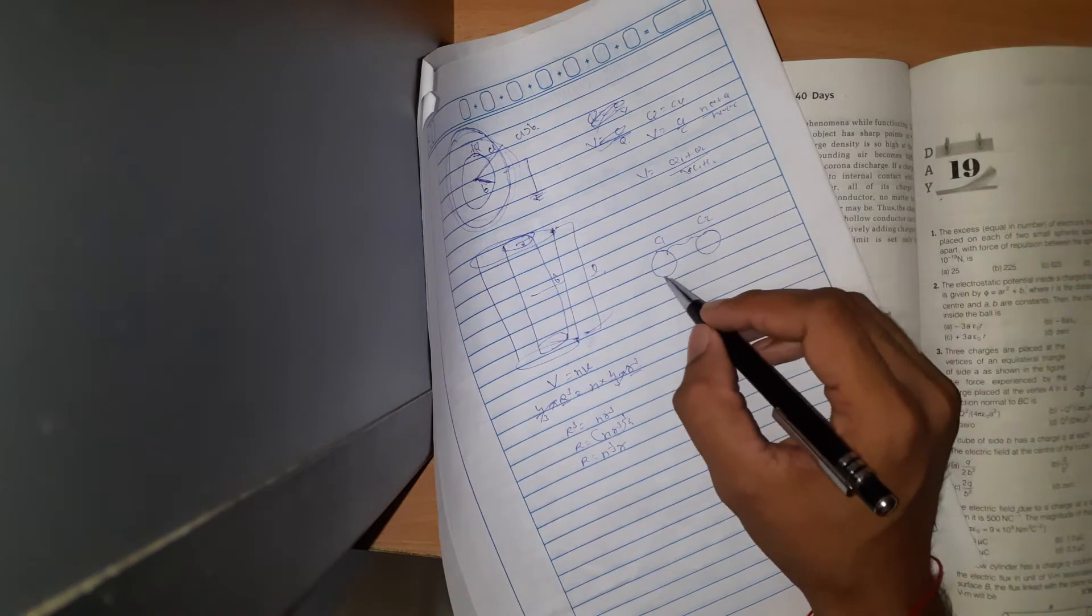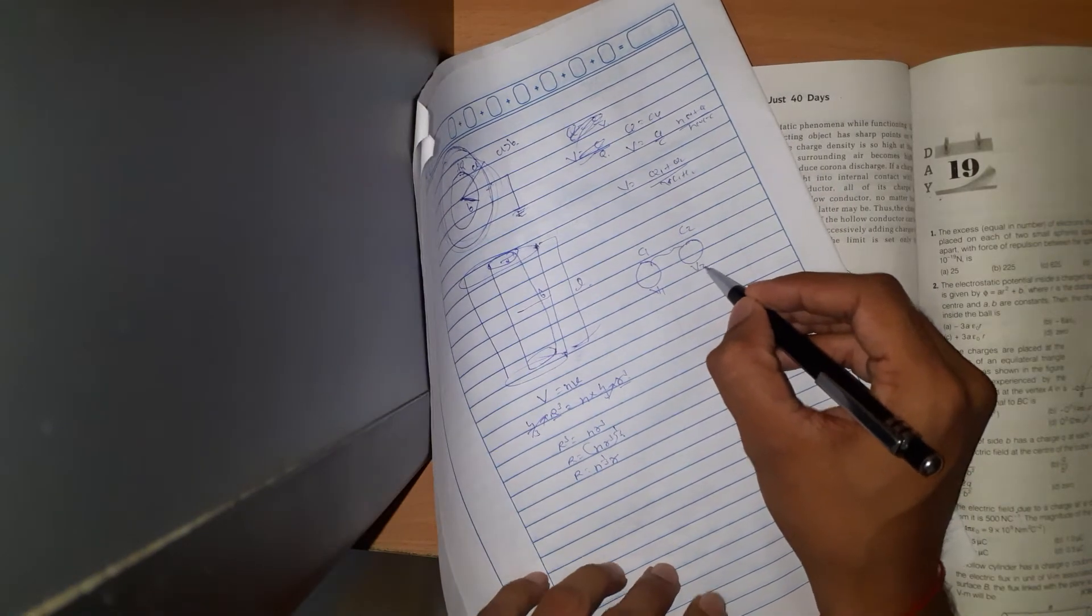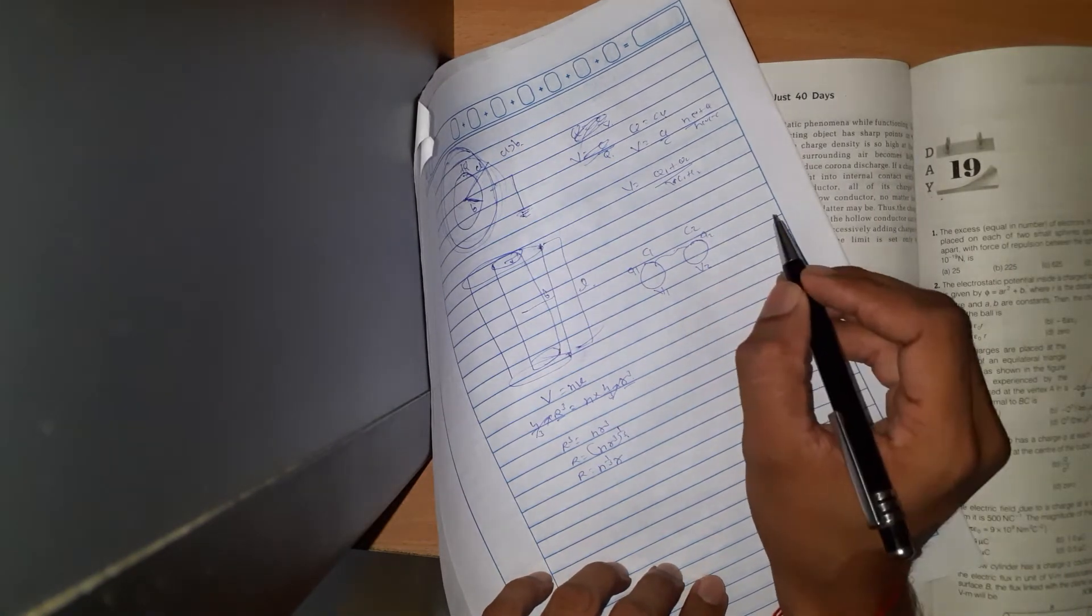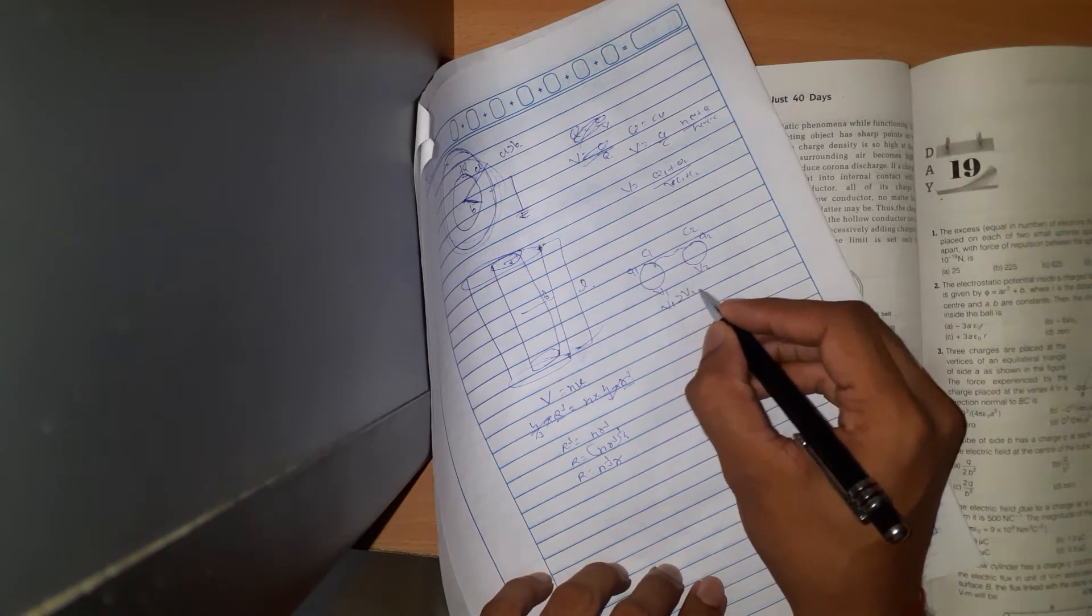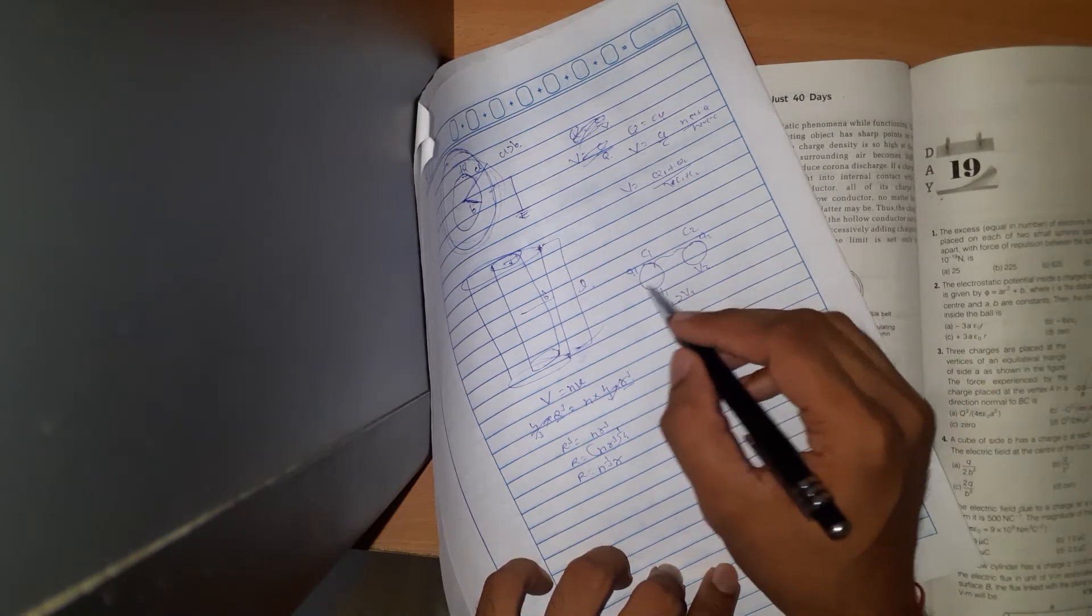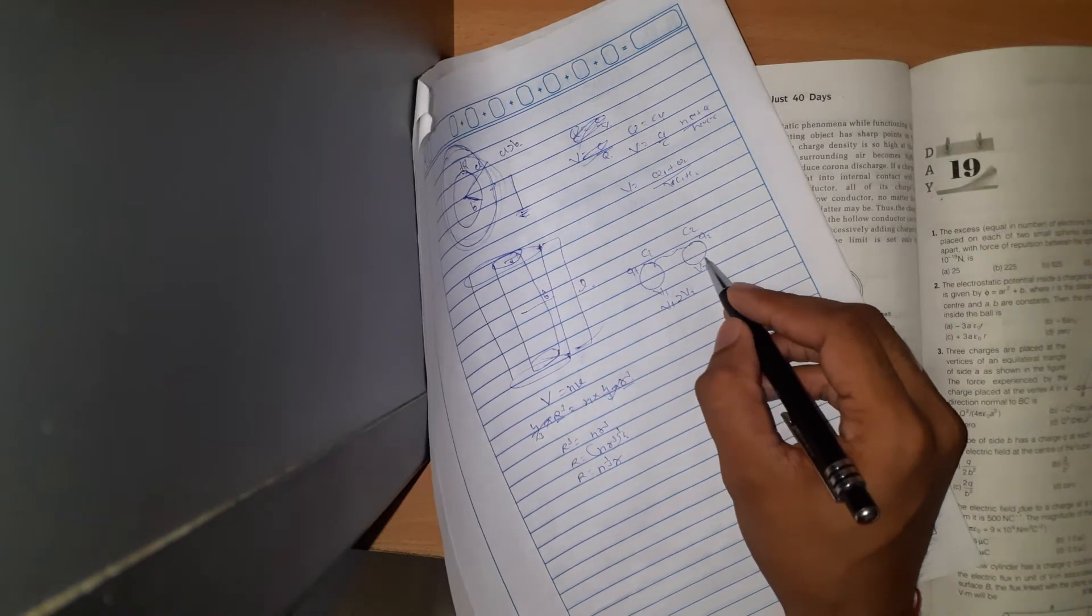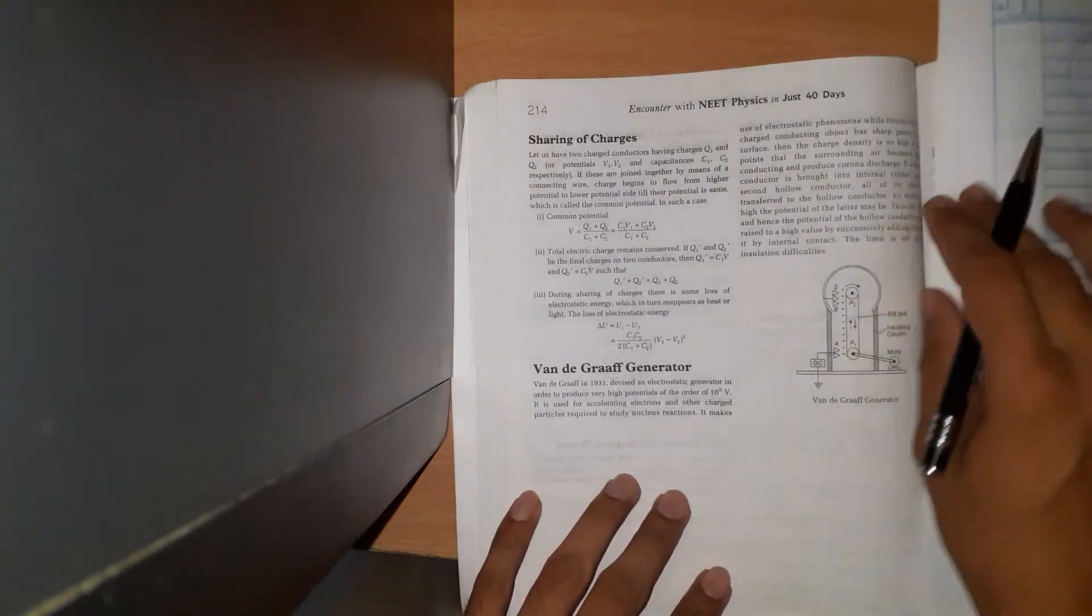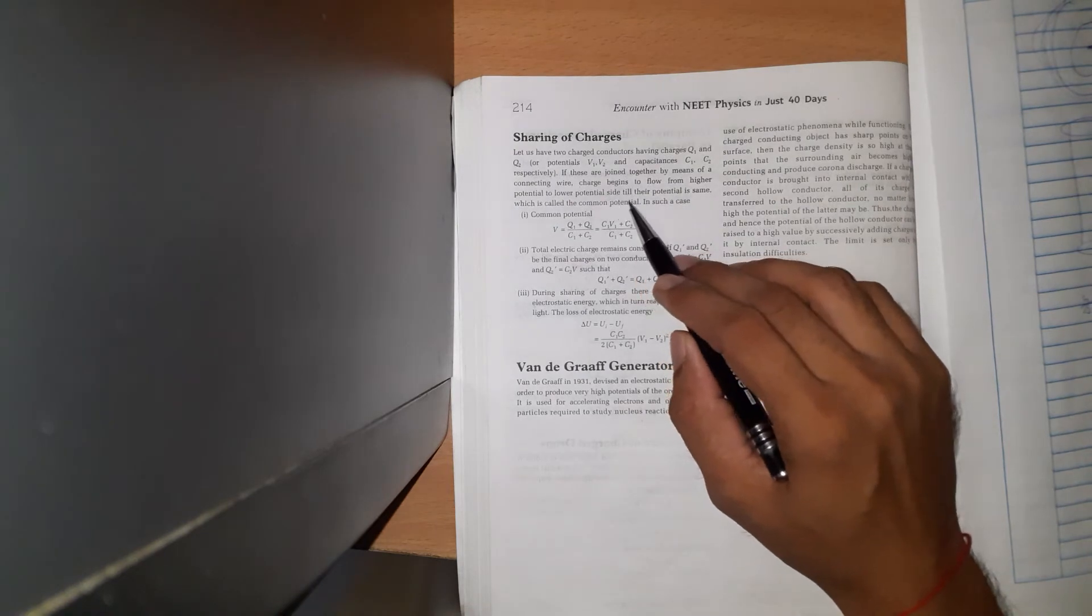Where does charge flow? The potential values are V1 and V2, with charge storage Q1 and Q2. If potential V1 is greater than V2, the first device has higher potential. Therefore, charge flows from high potential to low potential.